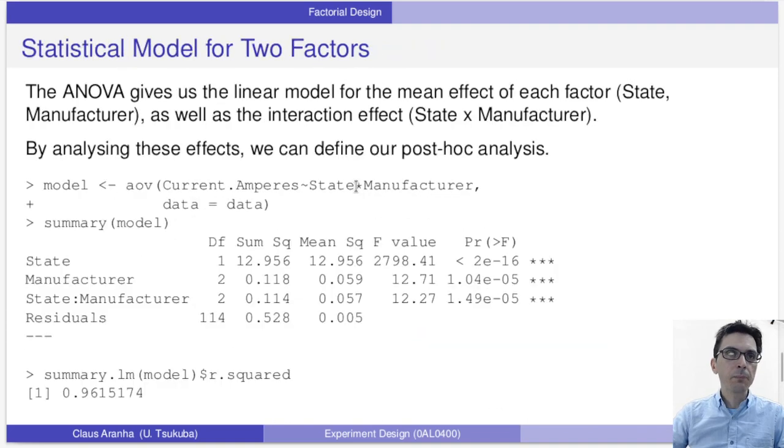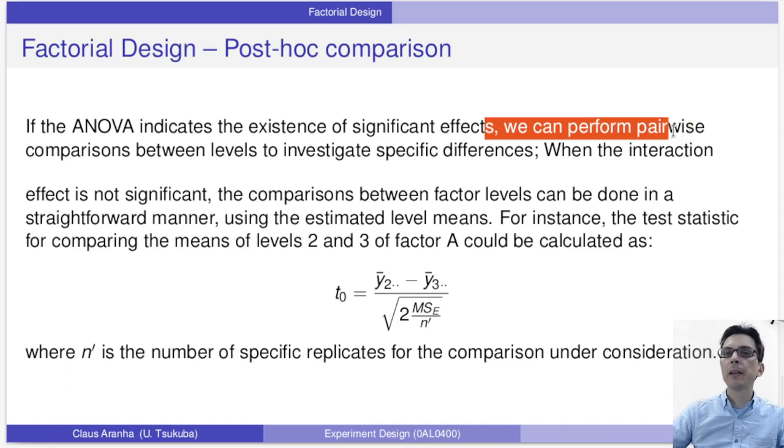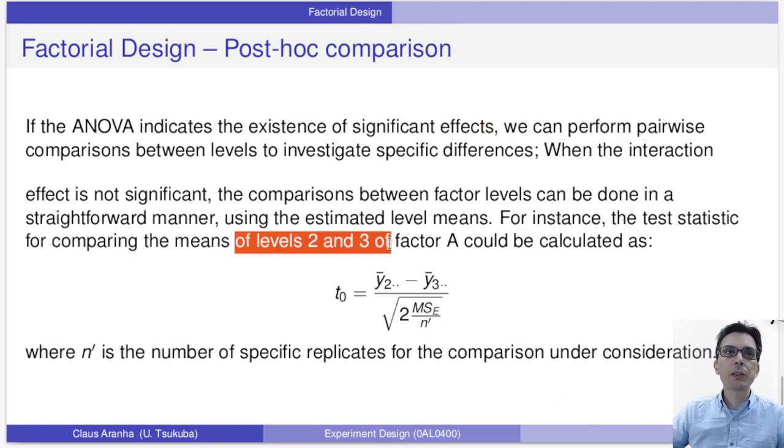Now, because we saw here that there is an effect of the state and a possible effect on the state and the manufacturer, then we do a post hoc comparison. Now, the post hoc comparison: the ANOVA indicates existence of significant effect. So we perform pairwise comparison. This is the same post hoc comparison of the ANOVA that we have been doing so far. Now, we have to choose, based on the ANOVA, which factors we are going to combine with which factors. For example, let's say that we want to compare levels two and three of factor A. So we saw that factor A has a higher effect. And factors two and three have a smaller one. And we want to see if there's a difference or not between two and three of factor A. So we do a post hoc analysis like this.